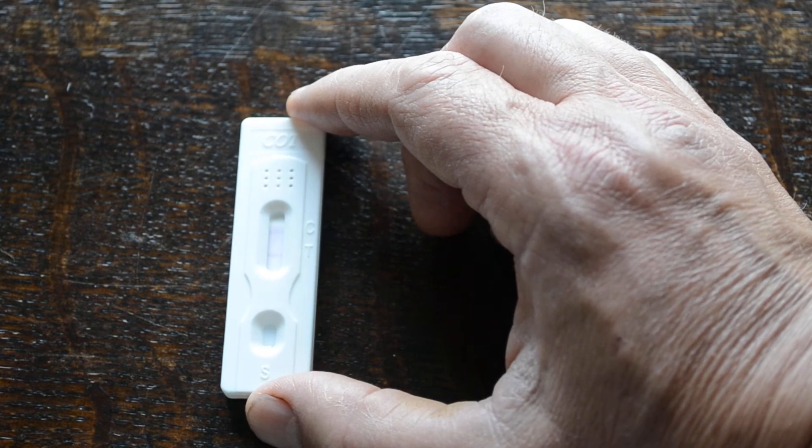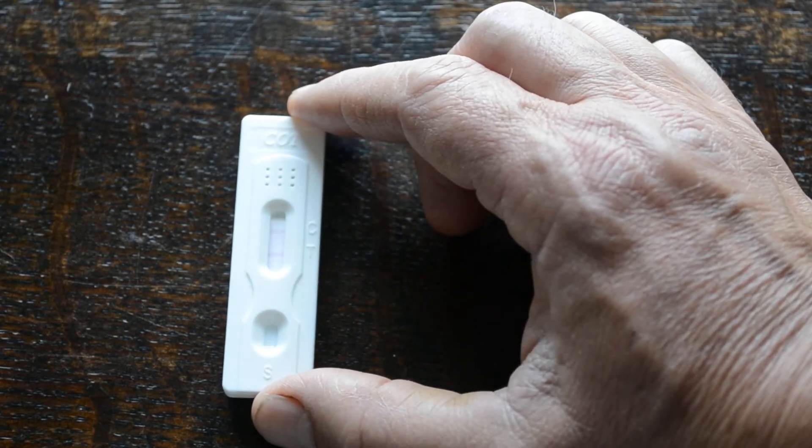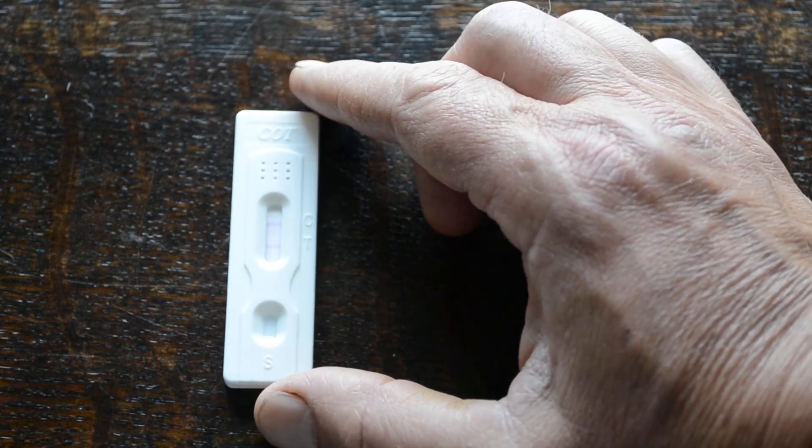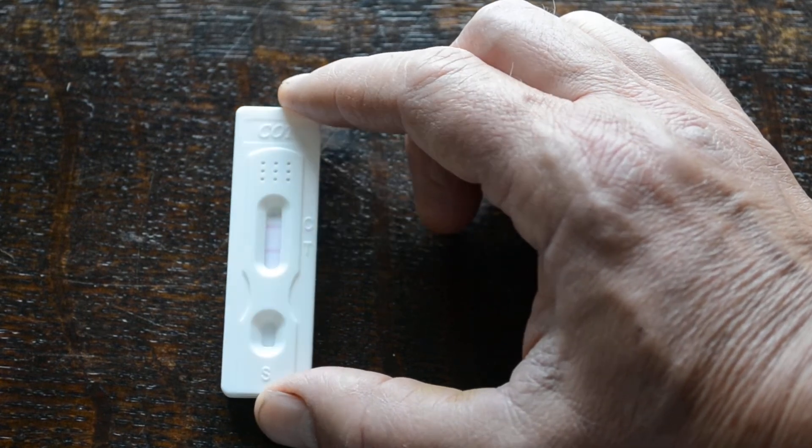If there is cotinine in the sample above 200 nanograms, you will get no test line forming at 5 to 10 minutes, just a clear control line.